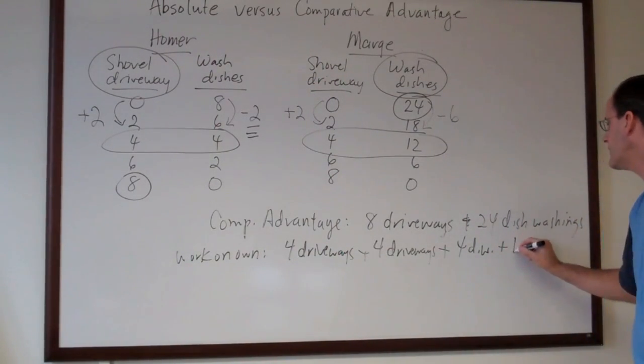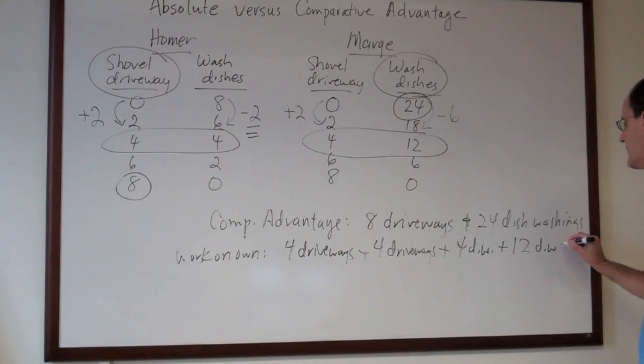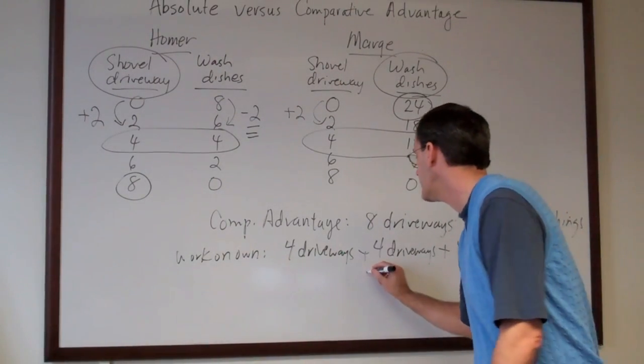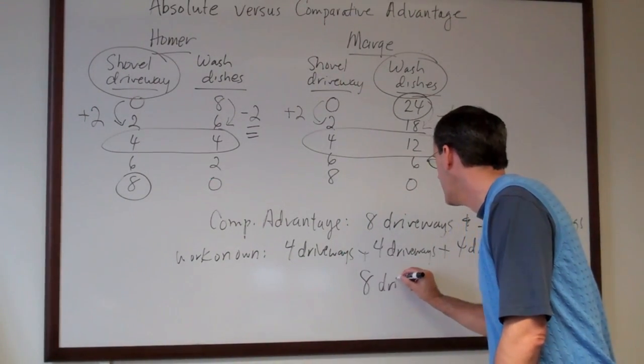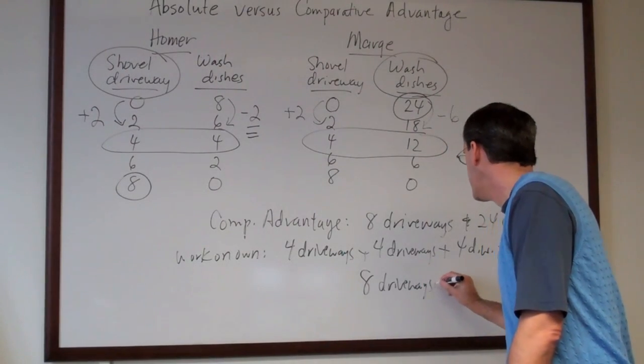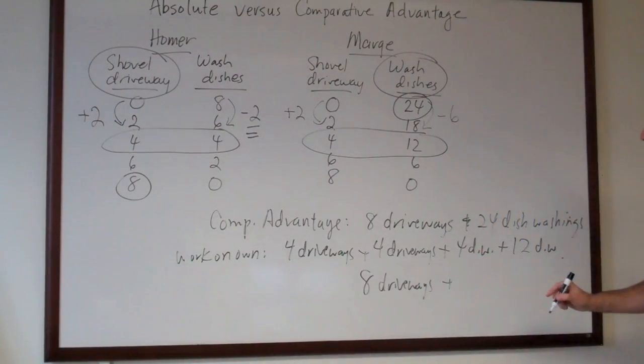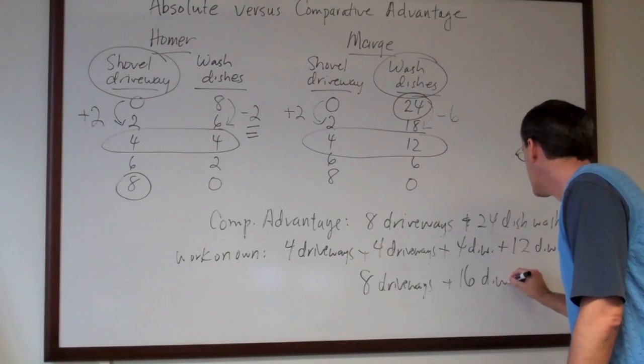Adding that up, the four and the four is still the same as before. We get eight driveways, but the four and the 12 makes 16 dish washings.